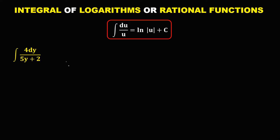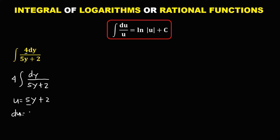For this next given, we need to rewrite it by putting the constant outside. So we have 4, then the integral of dy over 5y plus 2. Using u-substitution, u is equal to 5y plus 2, and du — the derivative of 5y is 5, and for the constant it is 0 — so du is 5 dy.